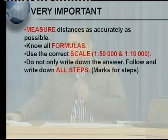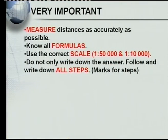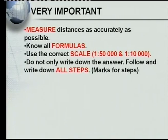Then, do not only write down the answer — follow and write down all steps, because you get marks for all steps. You must know your formula and write it down. Did you know that if you write down the correct formula, you already have one mark? One out of five is much better than zero out of five. So if you know your formulas, you'll at least get one out of five. There is a mark allocation for each of the steps.